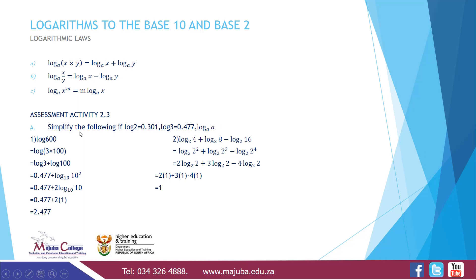To summarize: whenever there's a multiplication sign it becomes addition, and a division sign becomes subtraction. For example, log of 600: we write log of 3 times 100, which gives log 3 plus log 100. Log 3 equals 0.477, plus log 10 squared base 10, which is 0.477 plus 2 times 1. Since log base 10 of 10 equals 1, our answer is 2.477.